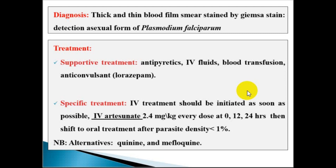The second-line treatment, if artesunate is not available, is quinine at 10 mg/kg. Quinine can cause adverse effects including immune reactions, visual disturbance, and hypotension.